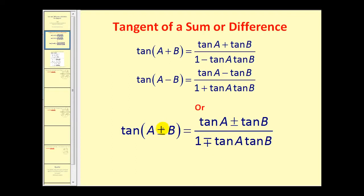If we use a plus sign for the angles, we use a plus sign in the numerator and a minus sign in the denominator. And if we use a minus sign — a difference — we'll have a difference in the numerator and a sum in the denominator.